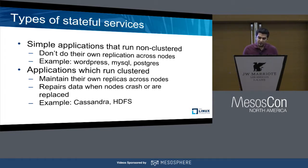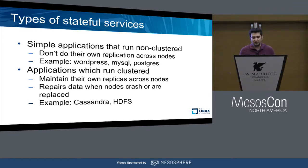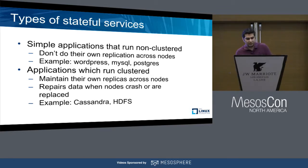The second type of stateful services are applications that do their own replication across nodes. So in case a node dies or fails, there is always either another copy of the data available somewhere, or the application is able to replicate data onto that node. If a crashed node comes back online, the application takes care of repairing data onto it — either manually or automatically. Cassandra and HDFS are examples of such stateful services.